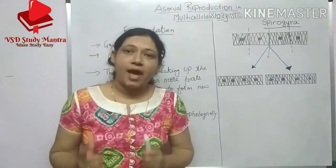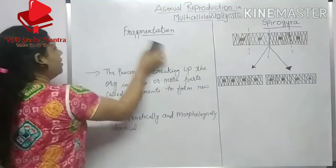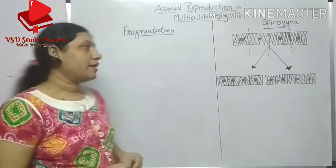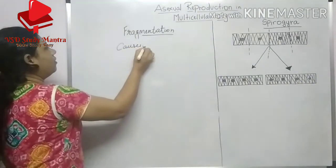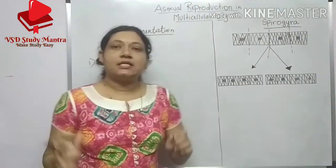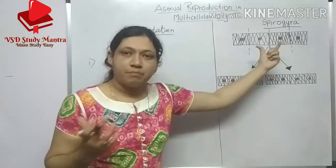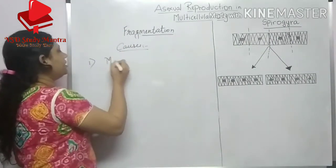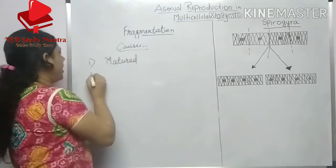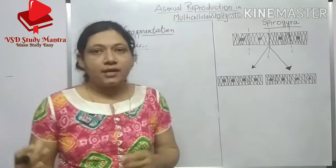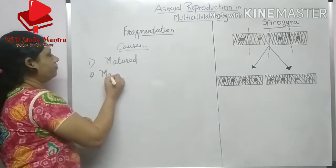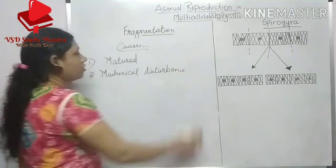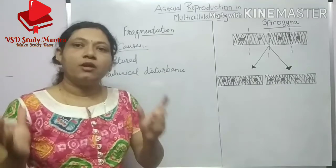Now we will see the causes — why fragmentation occurs. First, when the spirogyra gets matured, it breaks up and forms a new organism. Second, if there is a mechanical disturbance, the spirogyra splits into two or many parts.